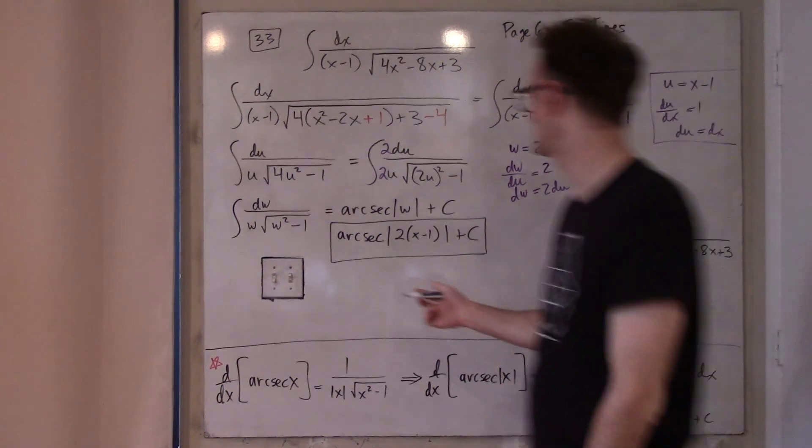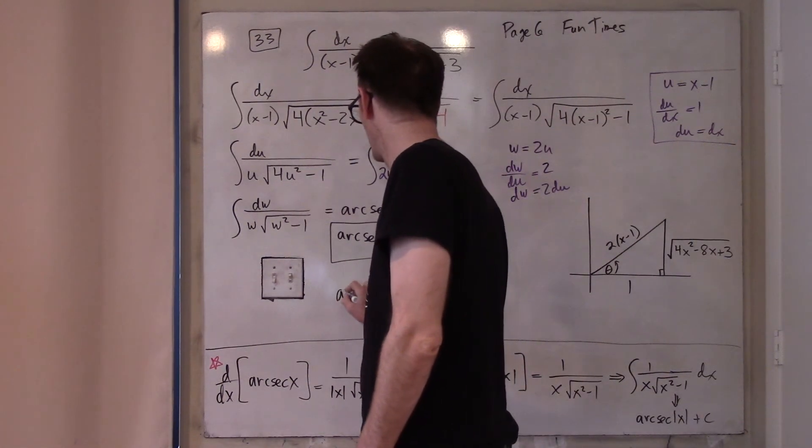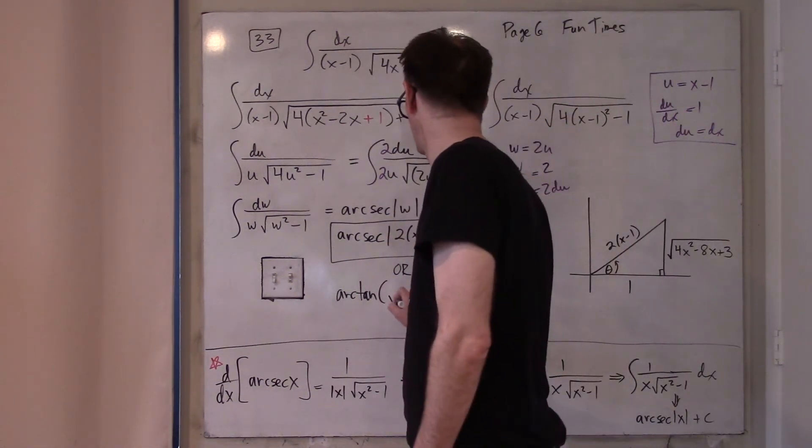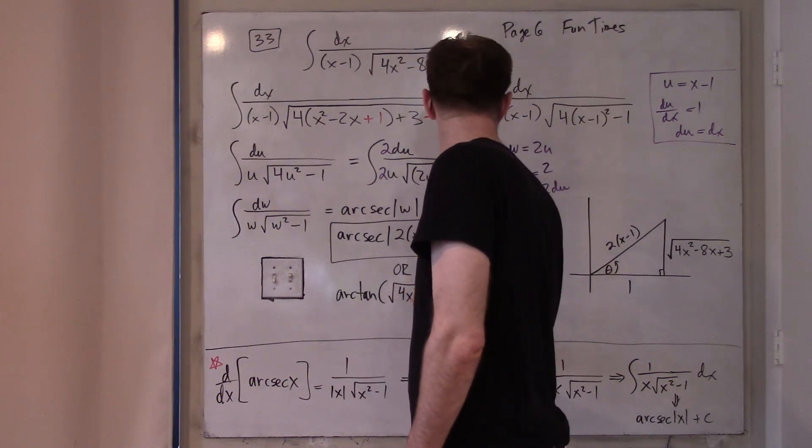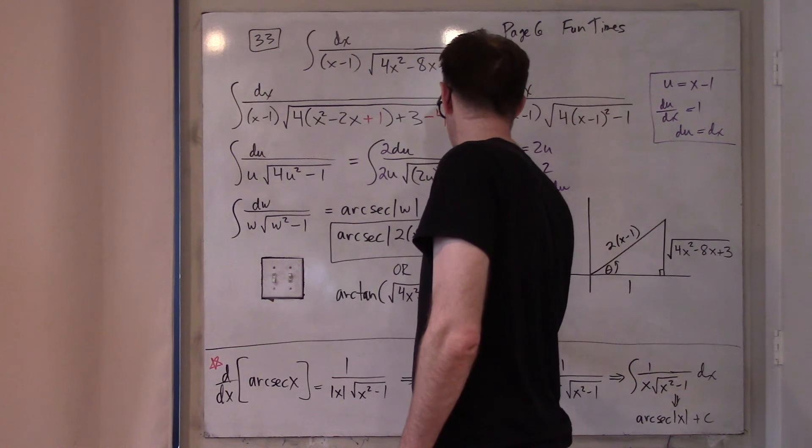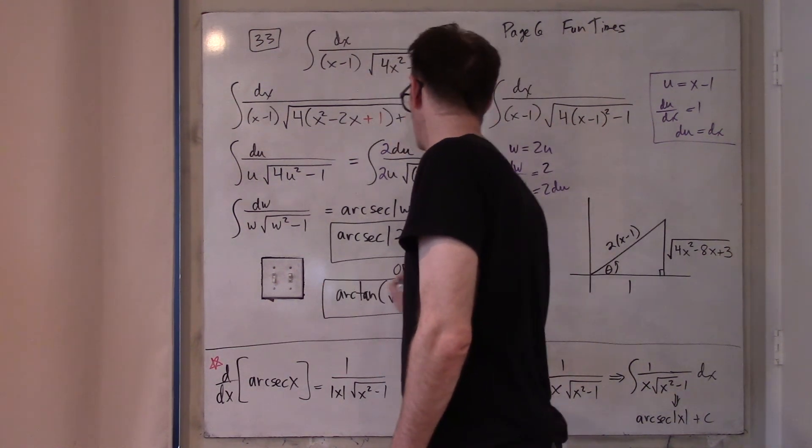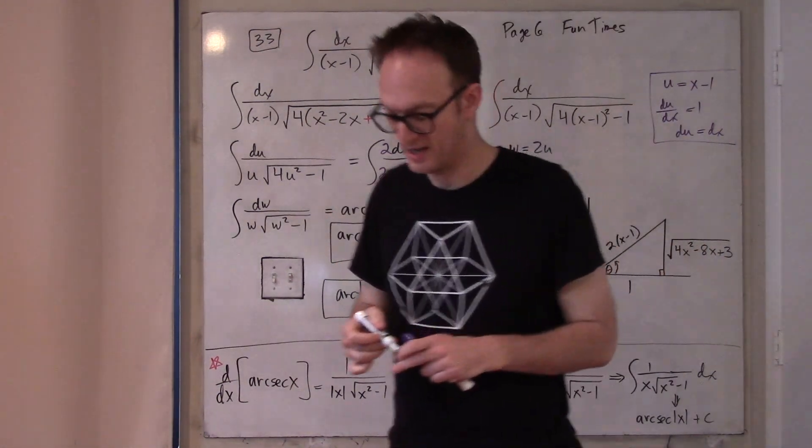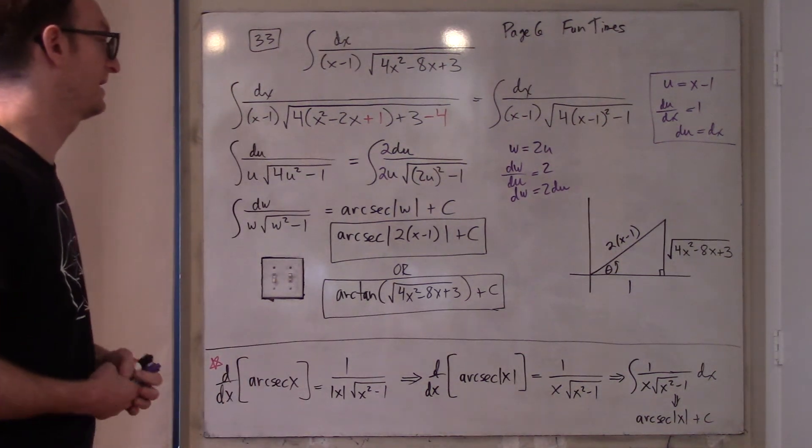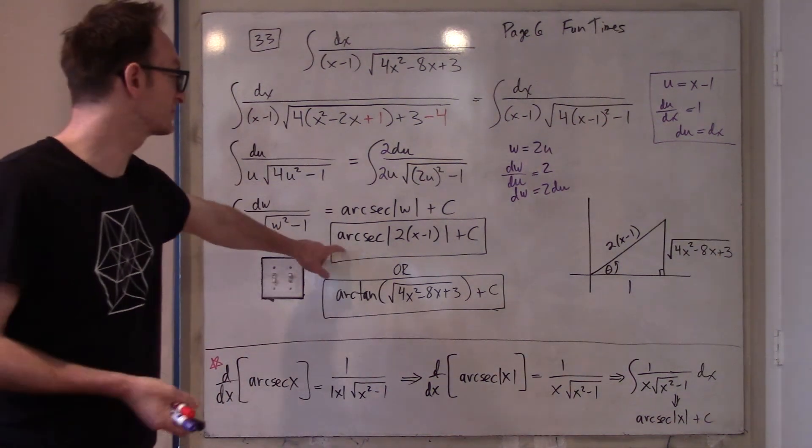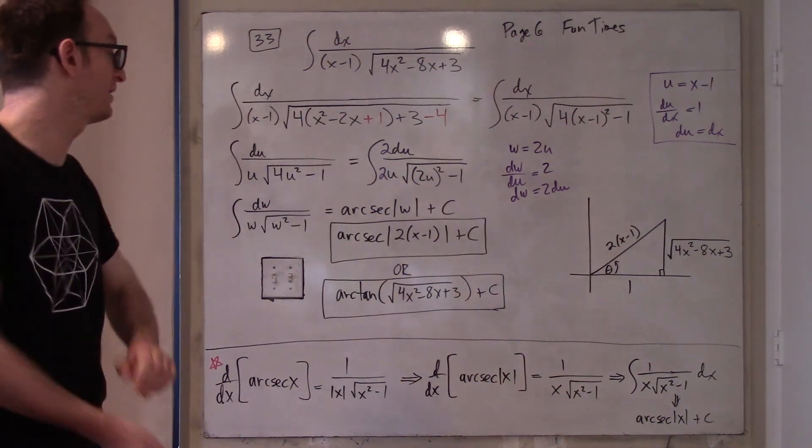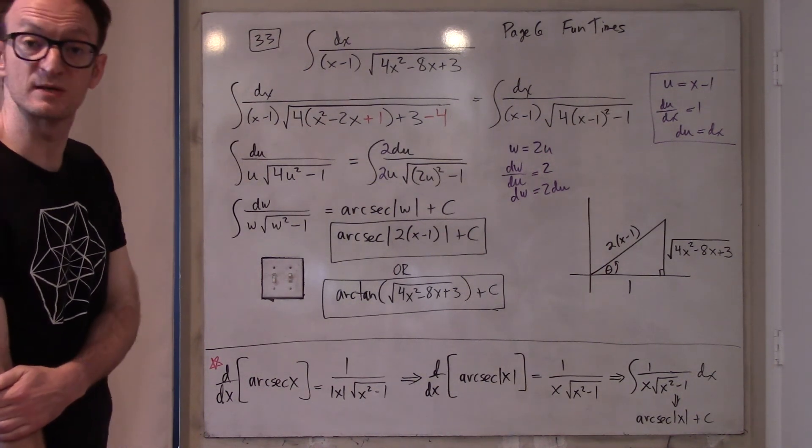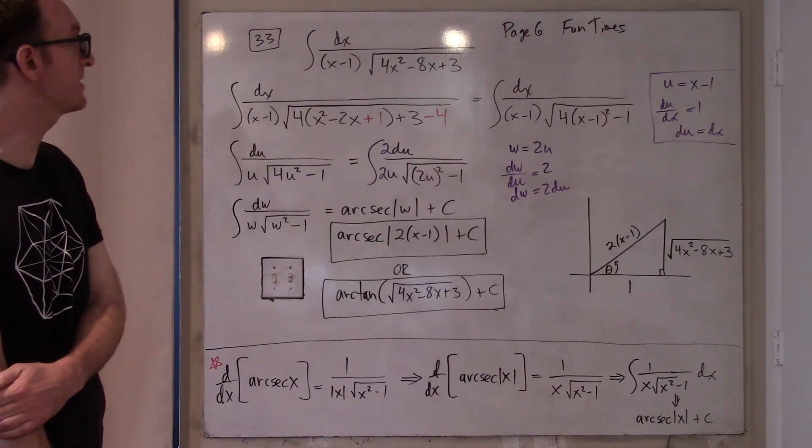Okay. So, what that means is that there's an alternative answer to this problem, which, for whatever reason, the computers prefer, that this is actually just arctan of the square root of 4x squared minus 8x plus 3. So, don't be alarmed if you're checking this problem with technology that you get a supposedly different answer. Well, it's not really a different answer because a given angle can be expressed in terms of arc secant or can be expressed in terms of arctan because they're both describing that angle sort of in different ways using different sides of the triangle. Okay. That was number 33.